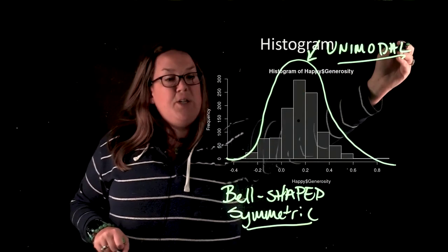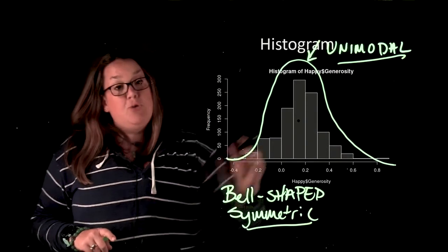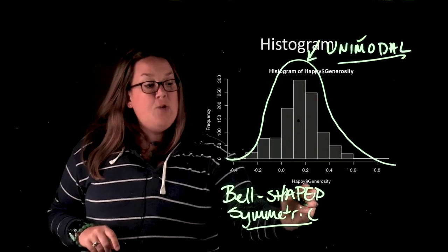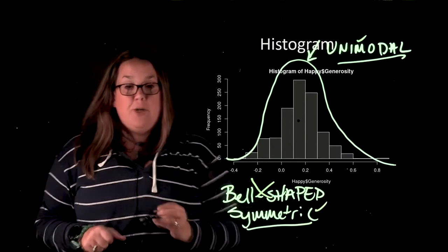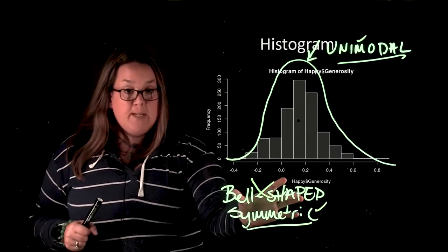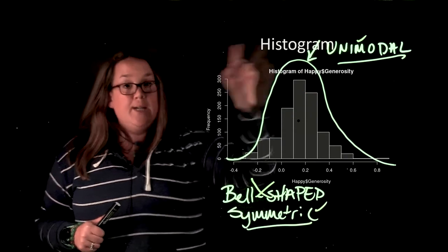However, you'll notice as we continue on this video, you can have distributions that are unimodal and symmetric, but they would not be bell-shaped. But if you have something that is bell-shaped, it is symmetric and it is unimodal.